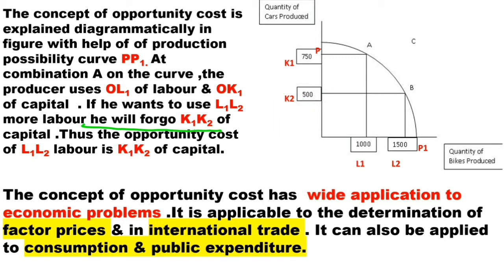So here you see that to produce more of one good, we have to forego some amount of another factor. What is the opportunity cost for this producer? As his labour unit has to increase, he has to give up some units of capital. So the opportunity cost for that producer is the K1-K2 units of capital foregone. That was the entire concept explained.